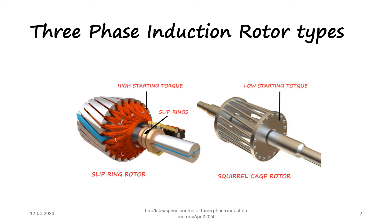There are two types of three phase induction motors, and the rotors of the two types are shown here. One is a slip ring rotor and the second one is a squirrel cage rotor. The squirrel cage rotor has copper bars or aluminium bars connected to the end ring — it is a completely closed structure. The slip ring induction motor has a three phase winding which is star connected, and the three ends of the winding are taken out and given to the slip rings. It is also called a wound rotor induction motor.